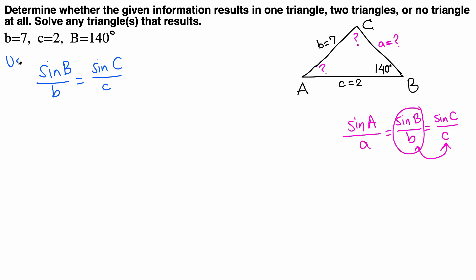Using sine law: sine B, which is sine 140, over b equals—sorry, b is 7. Sine C over c is 2. Let's cross multiply. Do not use decimal value for sine 140 yet.